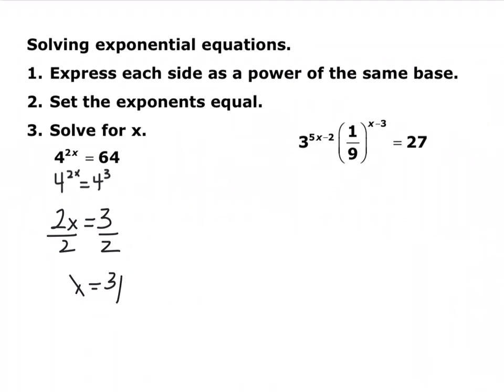When you're solving exponential equations, you always want to try and get the bases to be the same on everything. Now looking at this second example, I want you to write all three of these parts with the same base. The smallest base is base 3, so I'm going to write everything as a base 3. 1 ninth is the same thing as 3 to the negative 2, and 27 is the same thing as 3 cubed. Now pause the video and simplify this left side using your exponential rules.